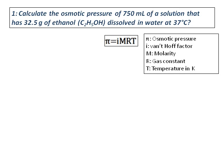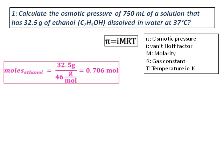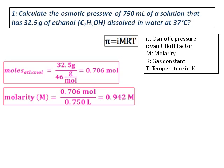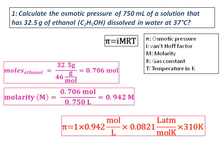To get molarity, we need moles. Mass is given, so moles = mass / molar mass. Once we have moles, divide by volume to get molarity. Substitute molarity into the equation, use R = 0.0821, and convert temperature to Kelvin by adding 273 to degrees Celsius. The answer is 23.9 atm.